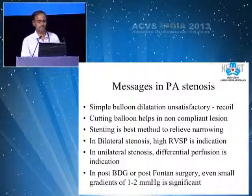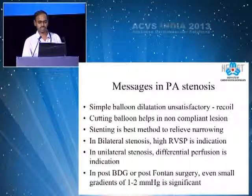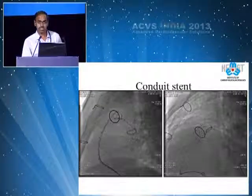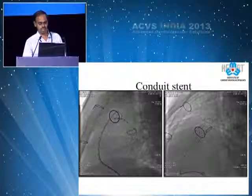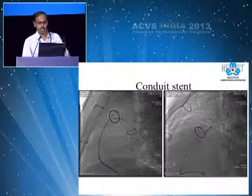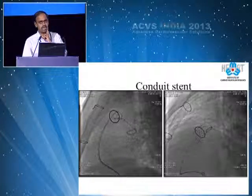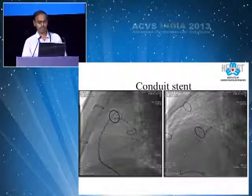The message in pulmonary artery stenosis: simple balloon dilatation is always unsatisfactory because there is terrible recoil. Sometimes in non-compliant lesions we can use cutting balloons; however, stenting is the best method to relieve the narrowing. In bilateral stenosis, high RV systolic pressure is an indication. In unilateral stenosis, we need to go by differential perfusion as measured by technetium-labeled macro-aggregated albumin lung perfusion scan. In post-bidirectional Glenn or post-Fontan surgery, even very small gradients of 1–2 mmHg may be very significant and we may have to resort to stenting.